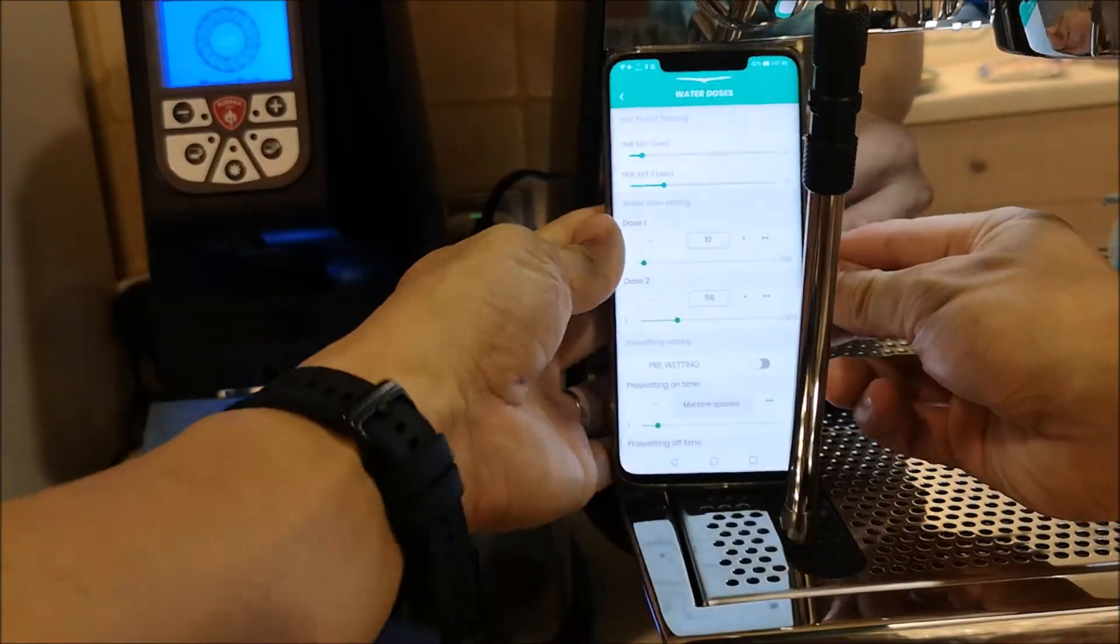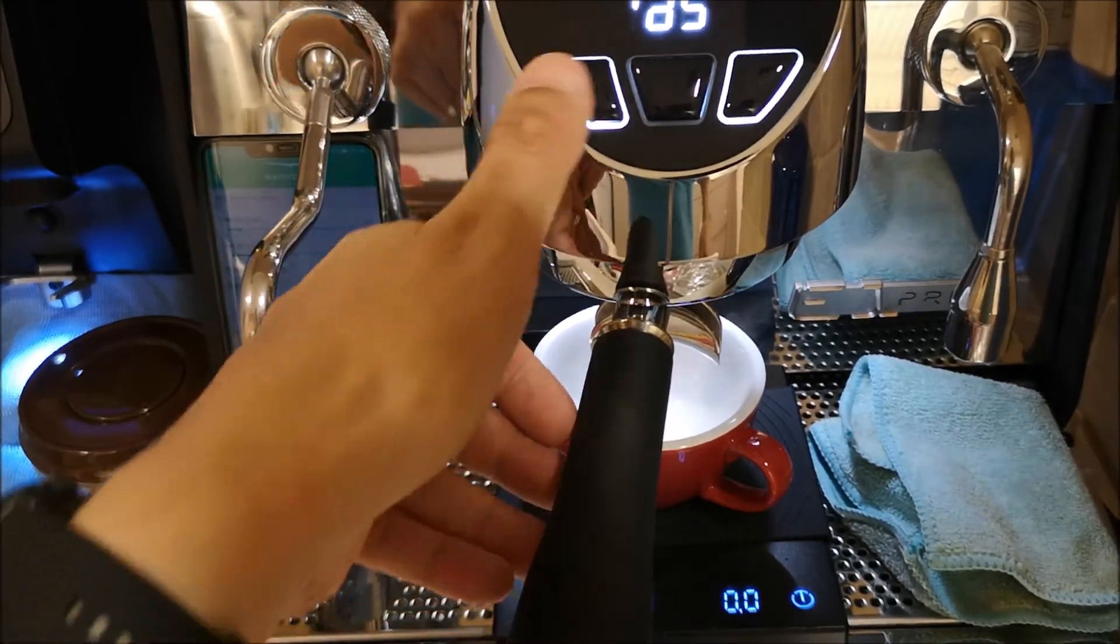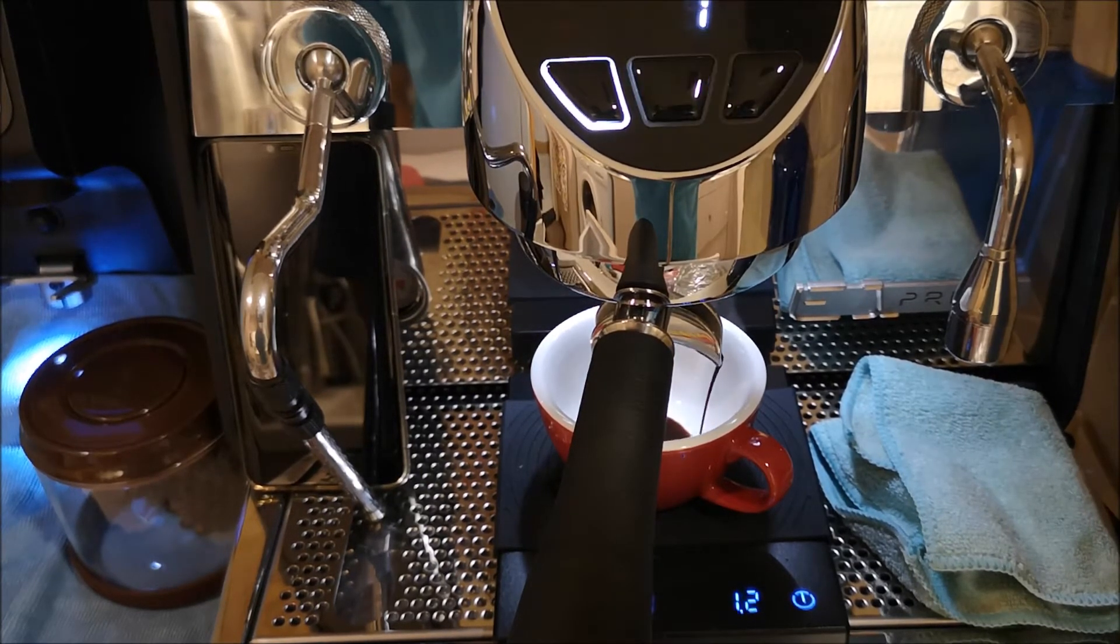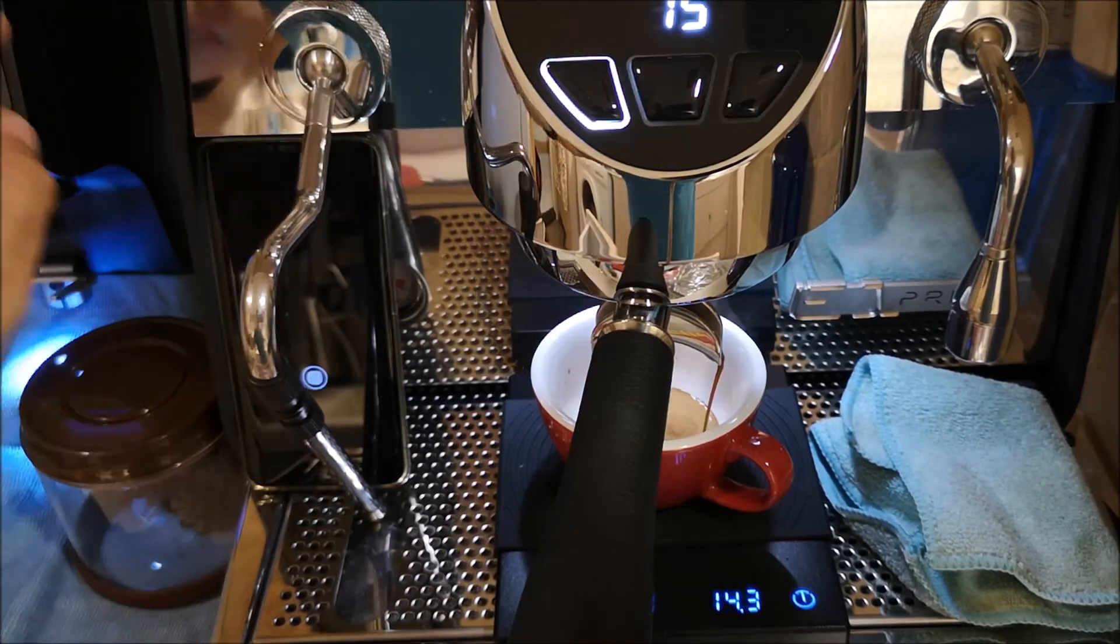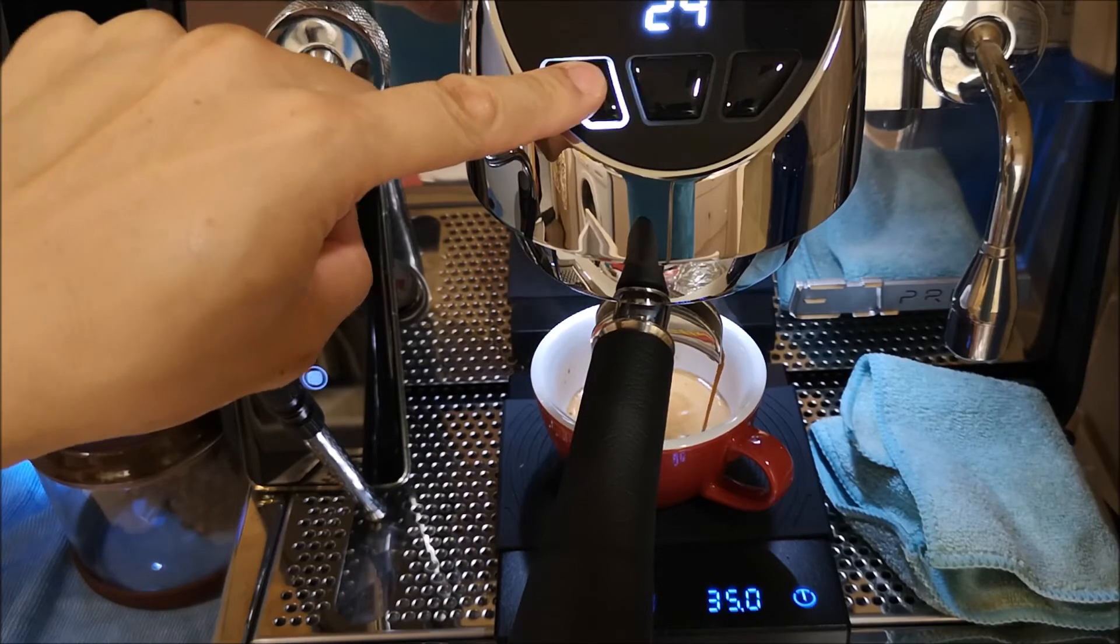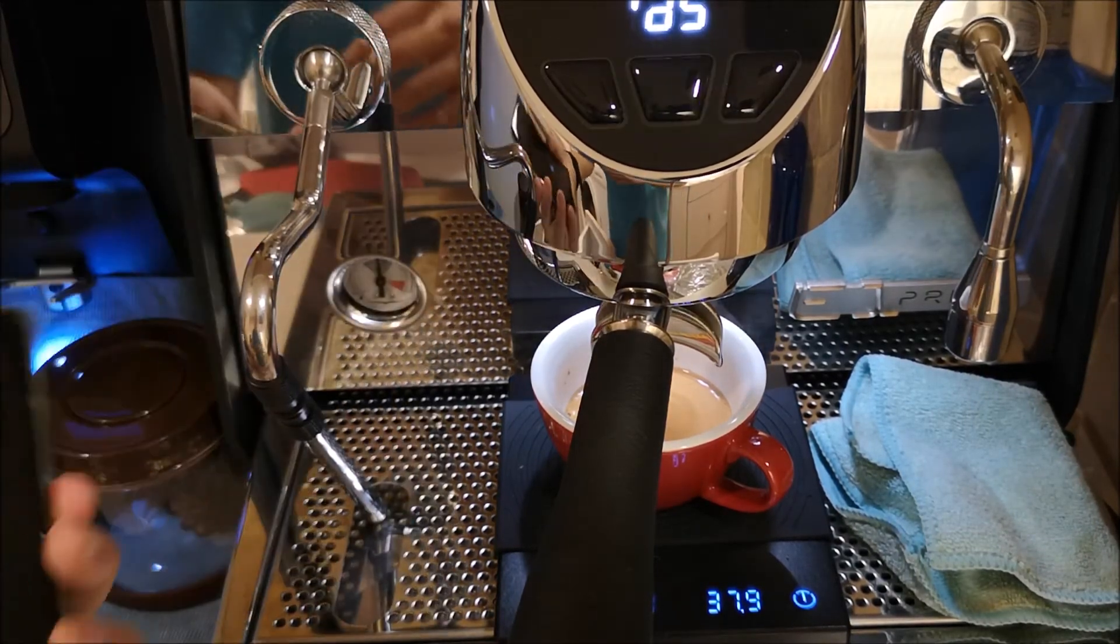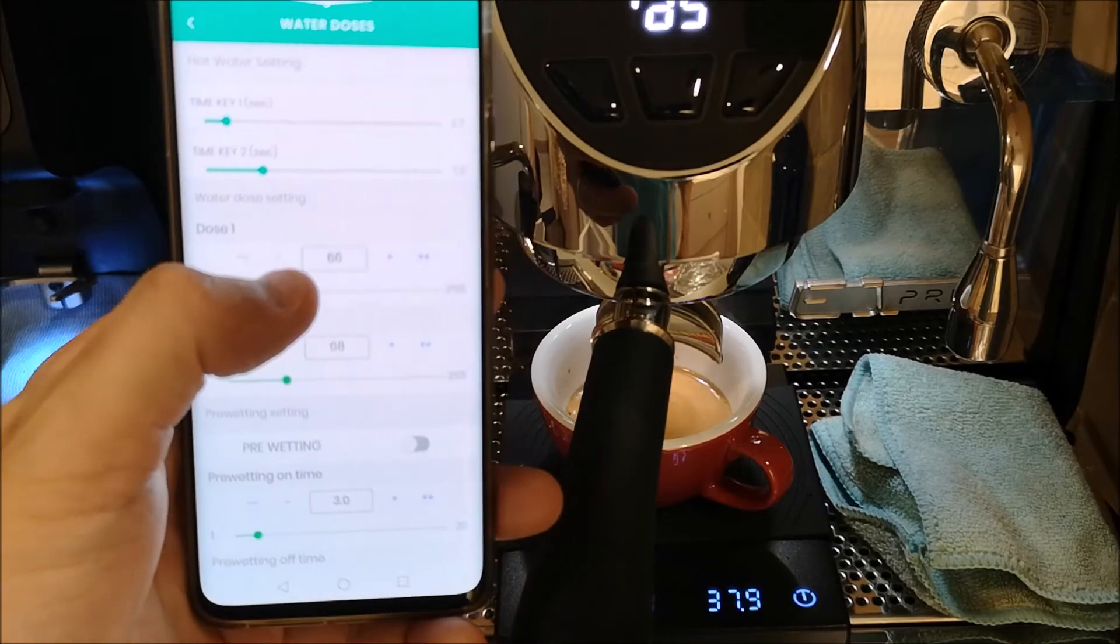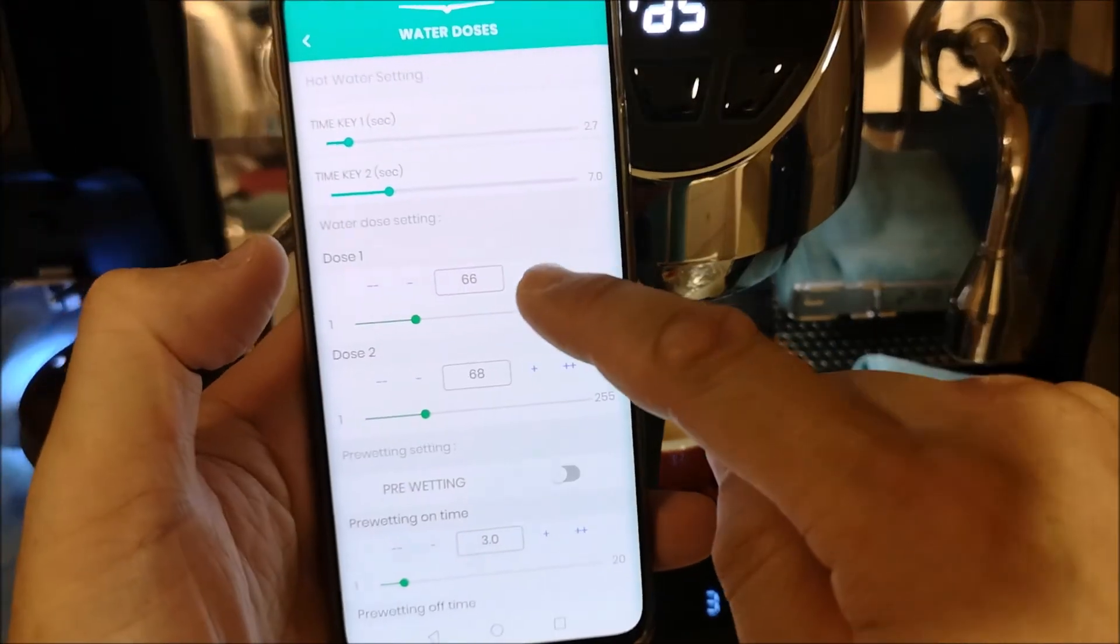Machine updated, just leave that here. Just the middle for the dose settings, press this to start. When it hits 36 I'll stop it. 38, so 24 seconds for 38 grams of espresso requires 66 milliliters of water from here. Now that is saved.